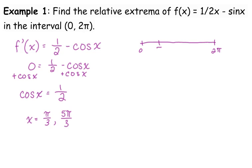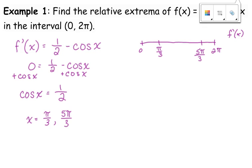Pi over three is pretty close to zero, and five pi over three is pretty close to two pi. Do you really have to have that scaled? No, I'm just giving you a visualization here. So we need to plug three values into our derivative — we need to pick three test values. So let's pick a value between zero and pi over three that's easy to test with trig functions. What would that be?